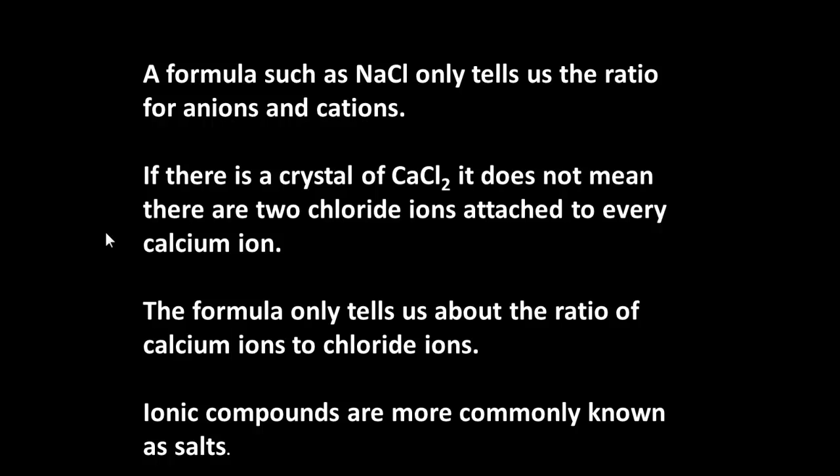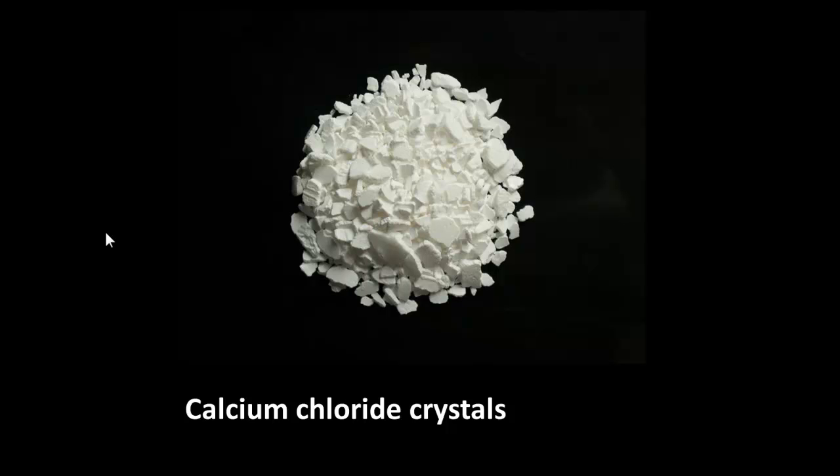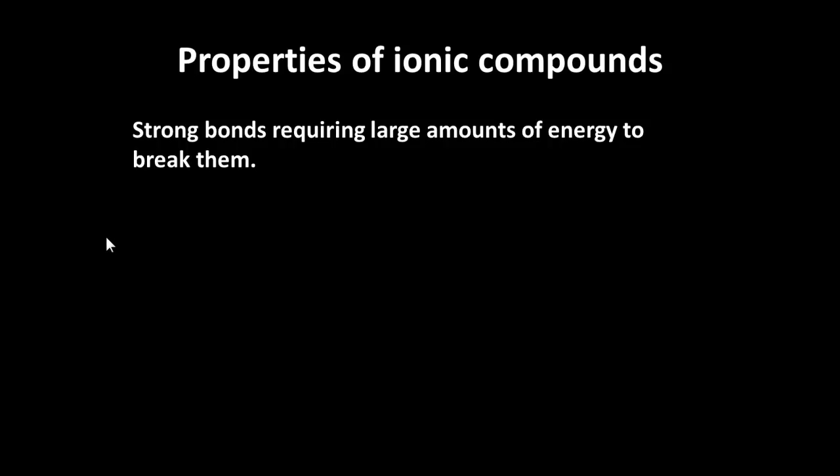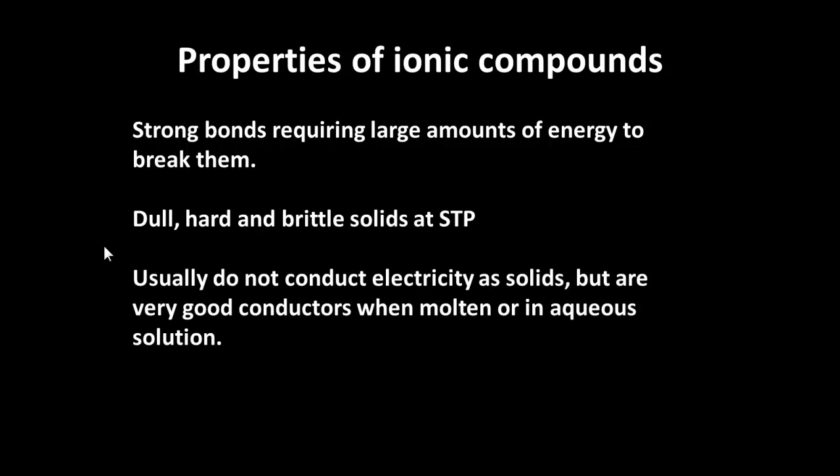So ionic compounds are more commonly known as salts. Here's a representation of calcium chloride crystals. This is the salt calcium chloride. Does this mean that ionic bonding shows any particular properties? In other words, if you have ionic compounds, what can we expect? Well, normally the bonds require quite large amounts of energy to break them. They're usually dull, hard, and they're brittle. That's at standard temperature and pressure.